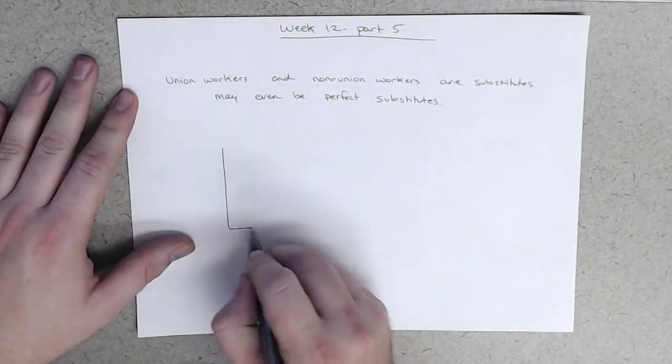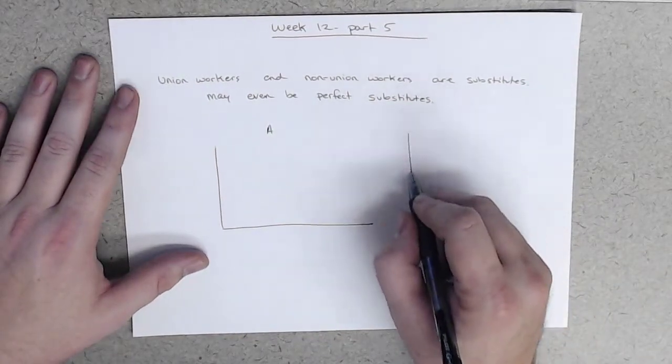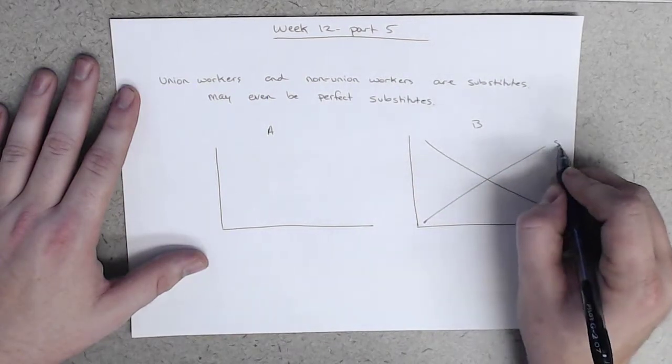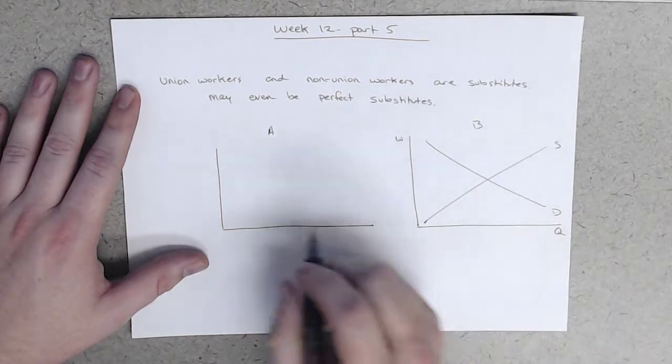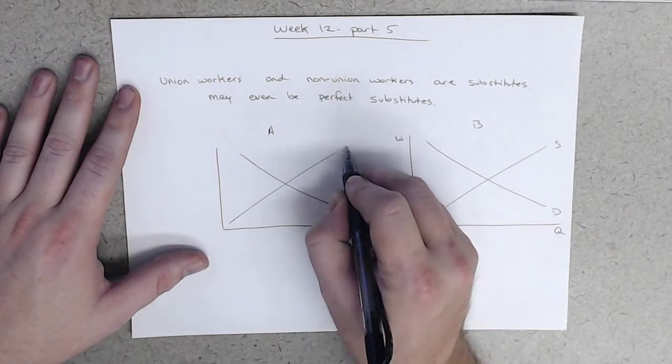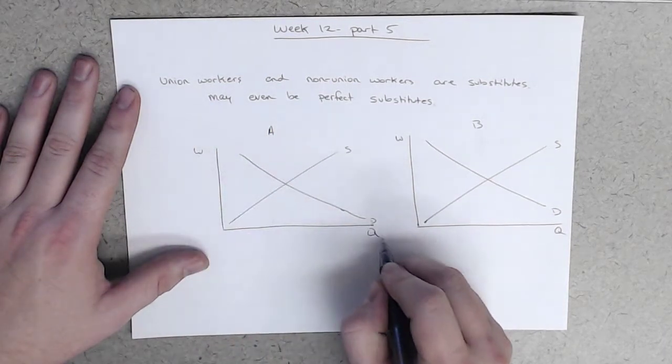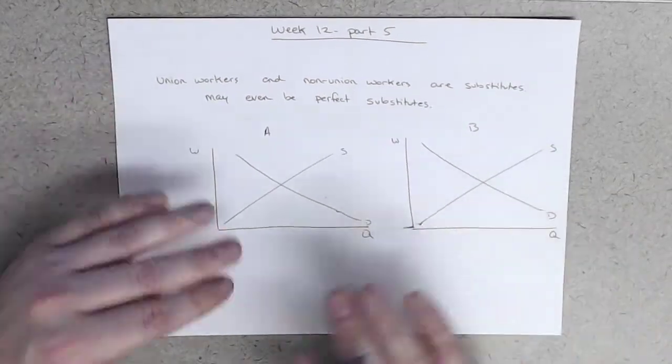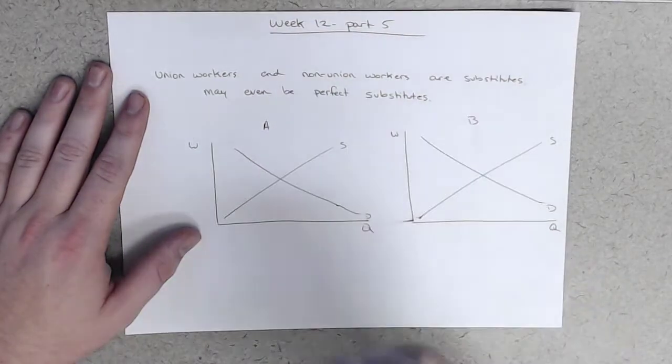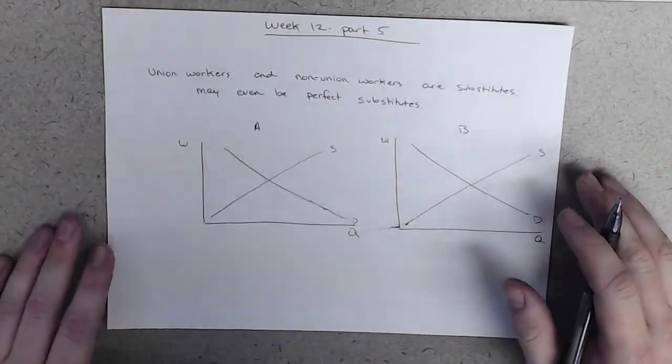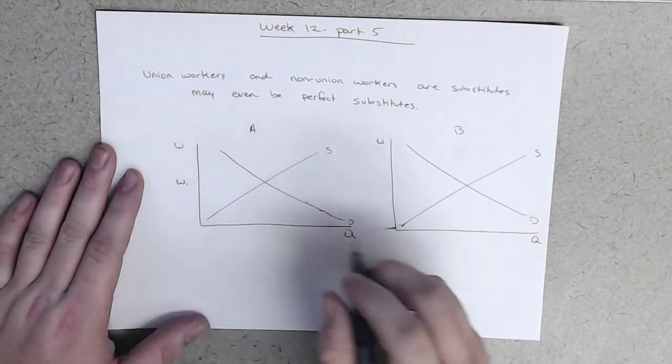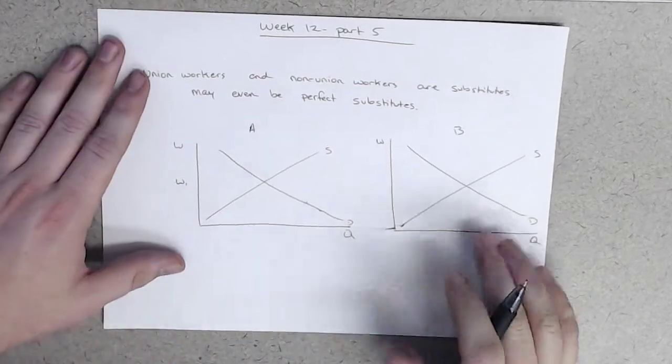So let's just suppose that we have two labor markets that are identical in every way, and neither one is unionized. We'll call this A, and we'll call this B. Okay, cool. We've got all kinds of good stuff going on here. Great. Alright. And let's also suppose that it is costless for workers to move between A and B. So there's nothing stopping a worker from this market from going into this market, and a worker from this market from going into this market. There's nothing in the way of that happening whatsoever.